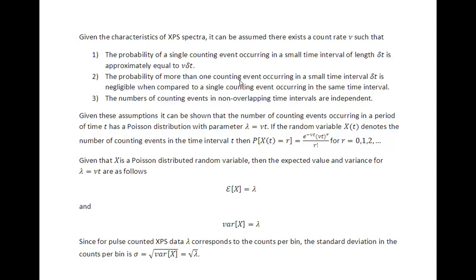The second condition: the probability of more than one counting event occurring in a small time interval delta t is negligible when compared to a single counting event occurring in the same time interval. This is also an assumption we make for pulse counted data from XPS.